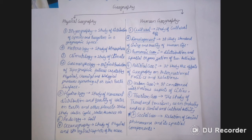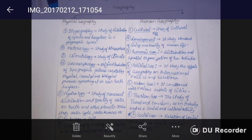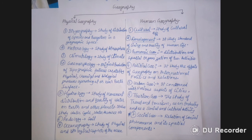Economic geography studies economic aspects from a geographical point of view. Fourth is political geography — the study of the effects of geography on international politics and relations. Fifth is urban geography — concerned with various aspects of cities. Sixth is tourism geography — the study of travel and tourism as an industry and as a social and cultural activity. Seventh is social geography — the relationship of social phenomena and their spatial components.